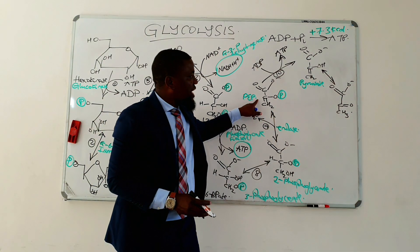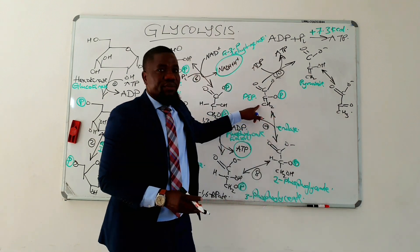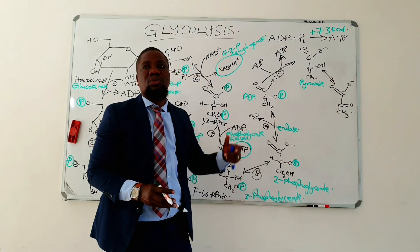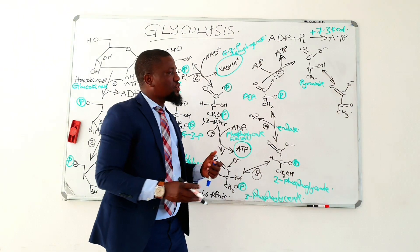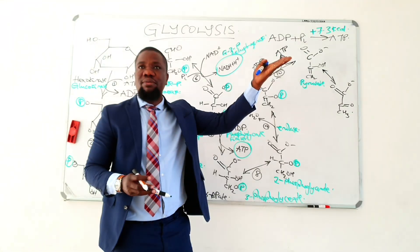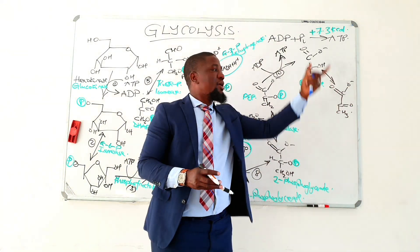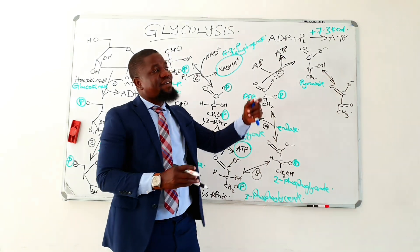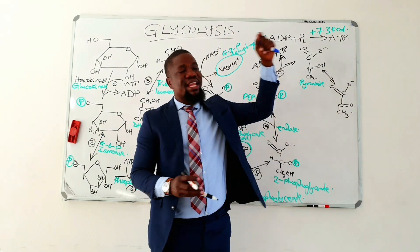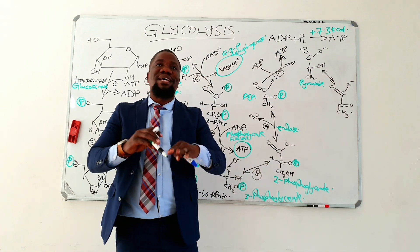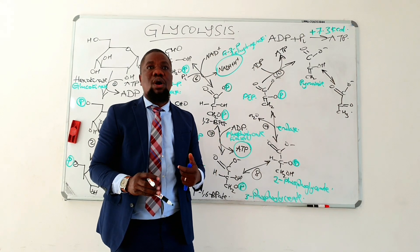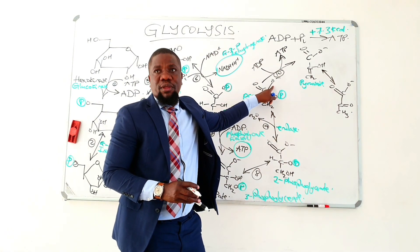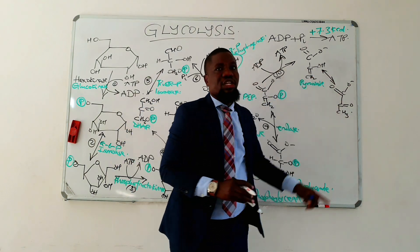Which means that the change in free energy between the end product and the reactant becomes a highly negative change. It's the same one that we talked about where we said that this could be likened to a situation where somebody is moving from the top of the building and falling onto the ground. This reaction becomes a highly exergonic reaction. However, however athletic somebody can be, they can't jump from the ground and come back to a building on top because that is actually going to be prohibitive in terms of the energy that one will require. Therefore, to go back from pyruvate into phosphoenol pyruvate is impossible because the change in free energy of this reaction is highly negative.